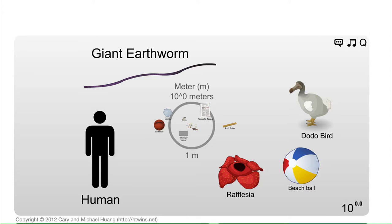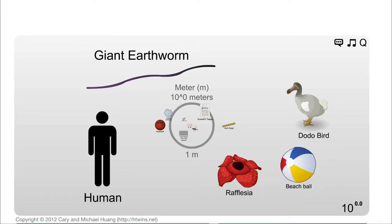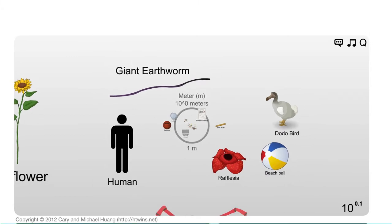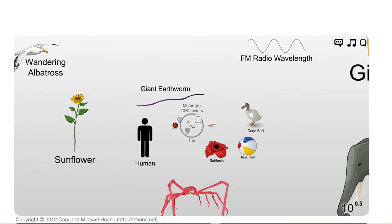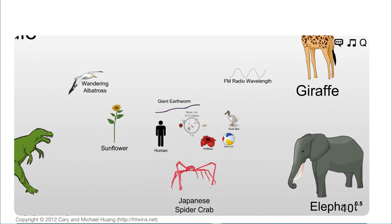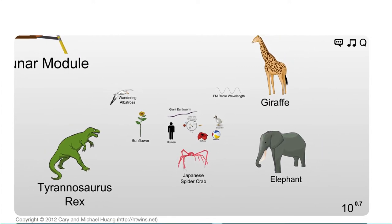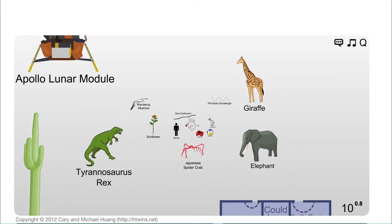So here as we start off with are some things that we are familiar with. We have the size of a human, beach ball, a dodo bird and some other things. Now if you're interested in learning about anything you can actually click on each of the objects and it will pop up a little bit of information on it. But what we're going to want to do is scroll towards the bigger objects. So we're going to scroll outward a little bit here towards things that are larger than a human and as we go out further we see things like some very large animals, giraffes and elephants, large dinosaurs and you can see that our human figure there is shrinking down and getting smaller and smaller.